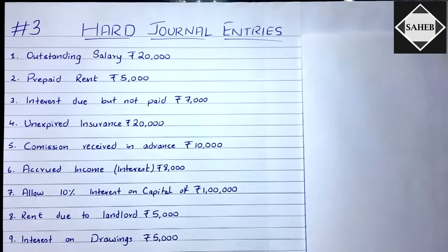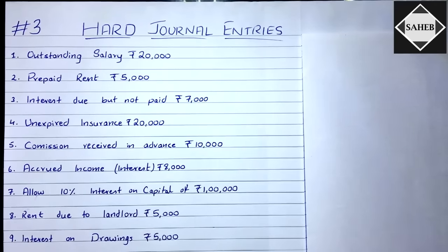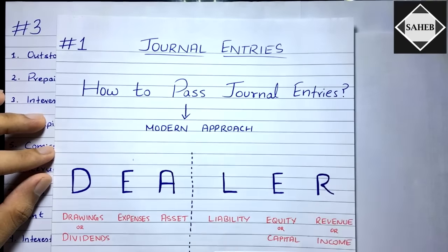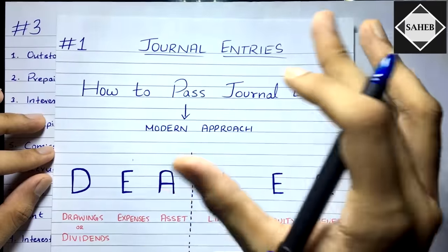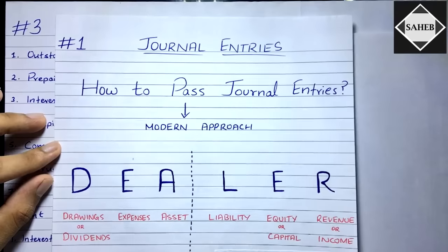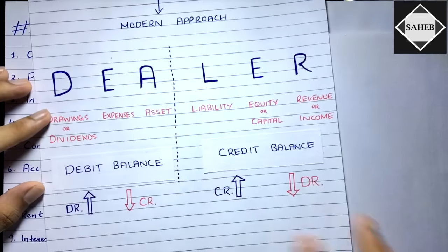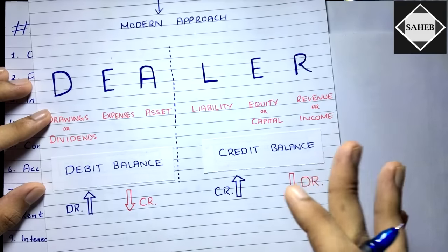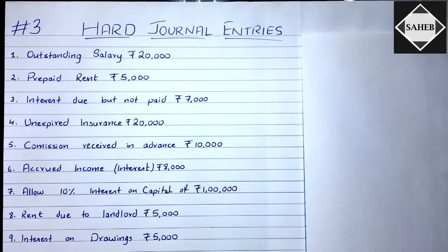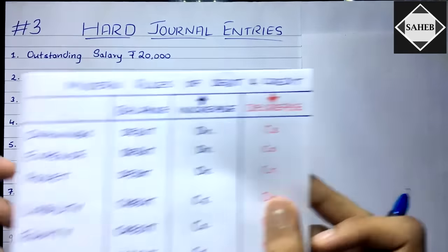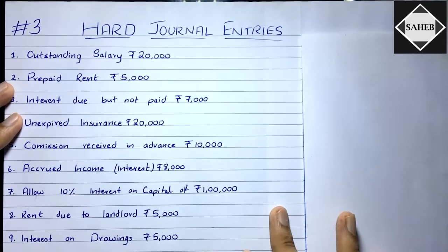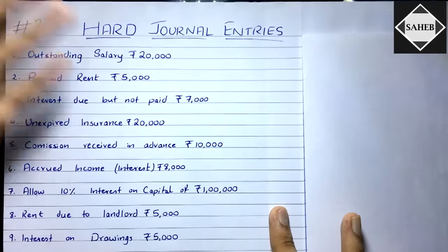In this video we are going to focus mainly on four transactions: prepaid expenses, outstanding expenses, accrued income, and income received in advance. In the previous first video we saw how to pass general entries with a 45-minute video with timestamps. In the second video we covered basic general entries. Now let's move to hard general entries.